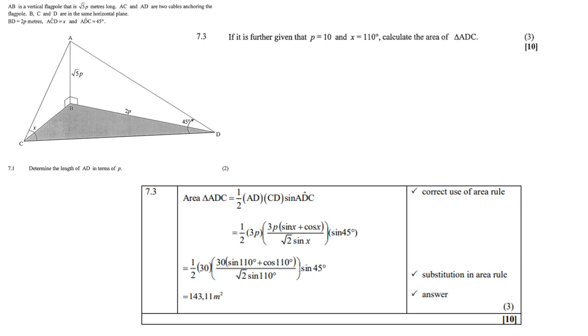So, the area of triangle ADC is a half times AD times CD times the sine of angle ADC. Take note, angle ADC must lie between AD and CD. Now, we already know AD is 3p. And CD, we just managed to prove in the previous question. It is that 3p sine x cosine x over square root of 2 sine x. And angle ADC is 45 degrees.